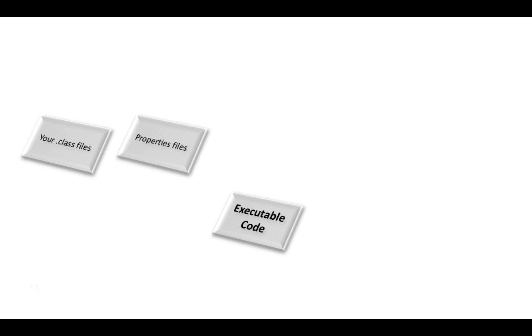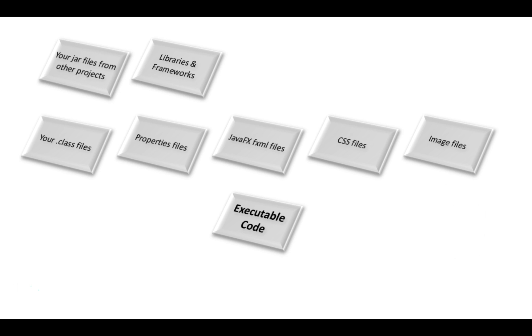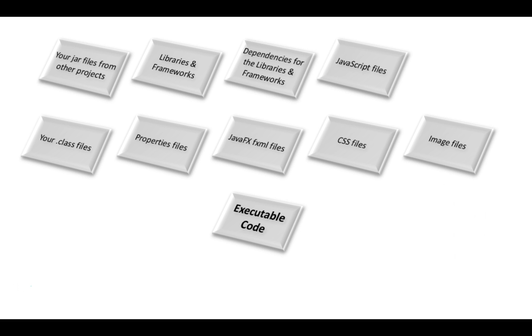The result of a software build is executable code. The executable code consists of what you have written, the Java Runtime Library, and any other libraries or frameworks. These libraries and frameworks may be code you wrote for another project, or code from other programmers that must be available to your executable code. These are part of what is referred to as the dependencies of your program.